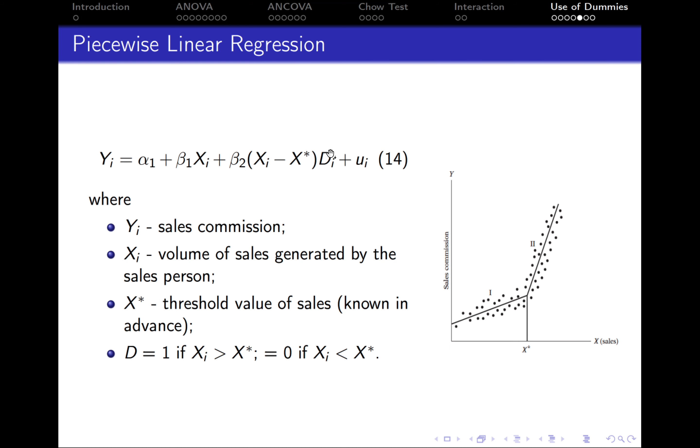The dummy variable Di takes the value of 1 if Xi is higher than the threshold value, after the person has reached a higher sales value, and is equal to 0 when the salesperson has not yet reached the target level, where their sales is below the target level.